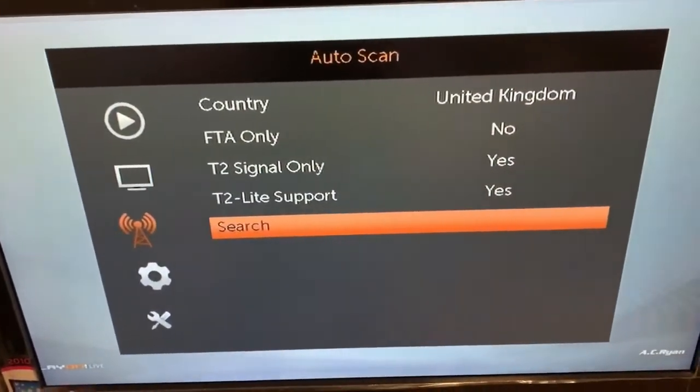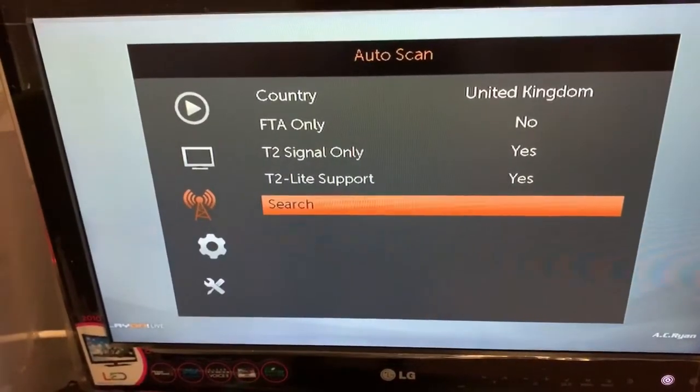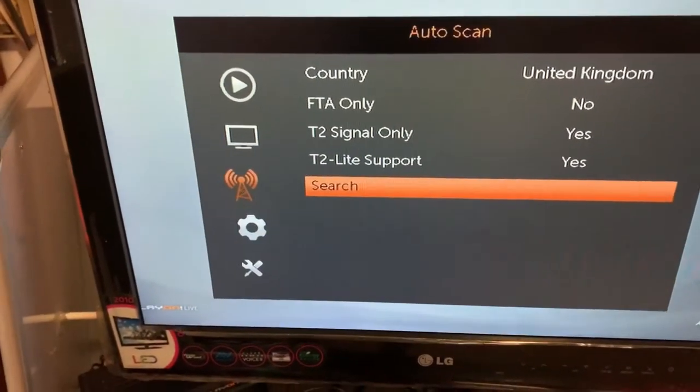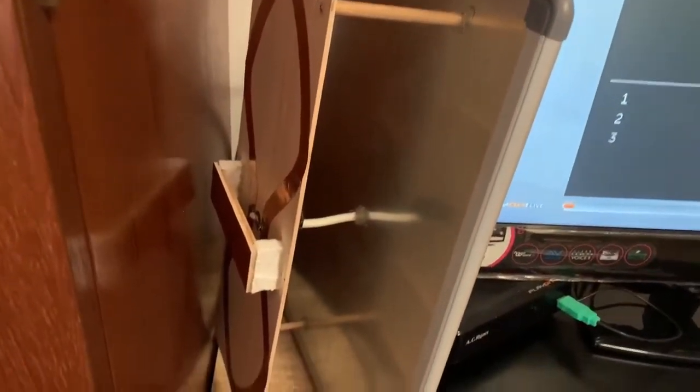I have the set top box set to the region of UK with the T2 signal and T2 lite signal support both turned on. I'm going to do a search, and I have the antenna positioned at 1.5 meters away from the window.